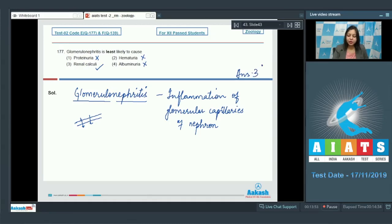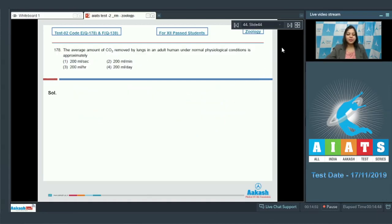Question number 178: The average amount of carbon dioxide removed by lungs in an adult human under normal physiological conditions is approximately 200 ml per second, option two 200 ml per minute, option three 200 ml per hour, option four 200 ml per day. Lungs act as accessory excretory organs.